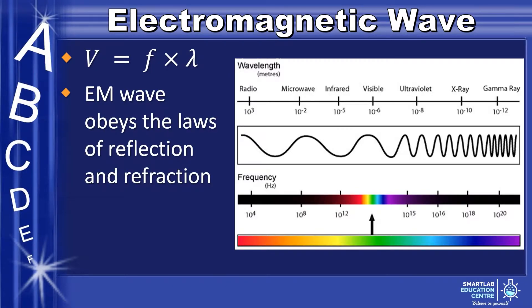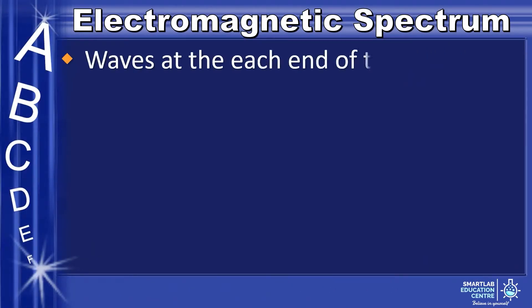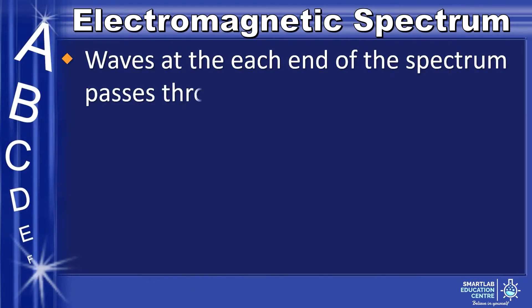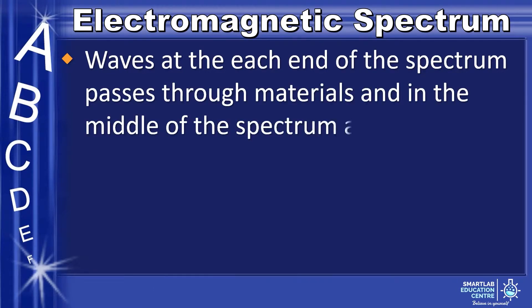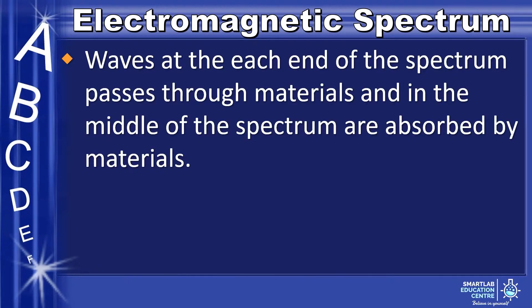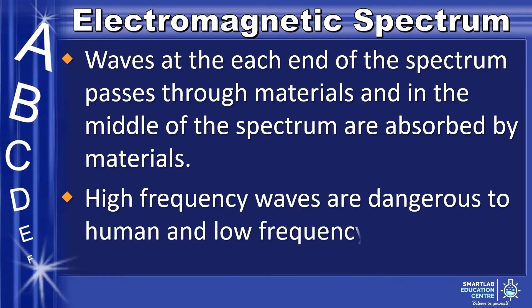EM waves obey the laws of reflection and refraction. The chart on the right shows the full electromagnetic spectrum, from radio wave to gamma ray. Note that visible light that humans can see is also an EM wave, and it only occupies a small portion in the middle of the electromagnetic spectrum. Waves at each end of the spectrum pass through materials, while those in the middle are absorbed by materials. High frequency waves are dangerous to humans and low frequency waves are not.